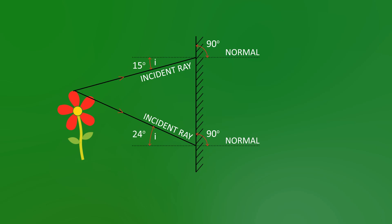And we always measure angles between the normal and the ray. This is because we sometimes have funny shapes. Right, now we've drawn our normals, we can add our reflected ray.